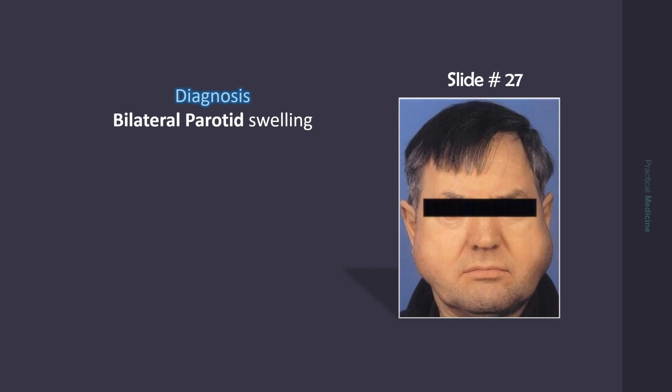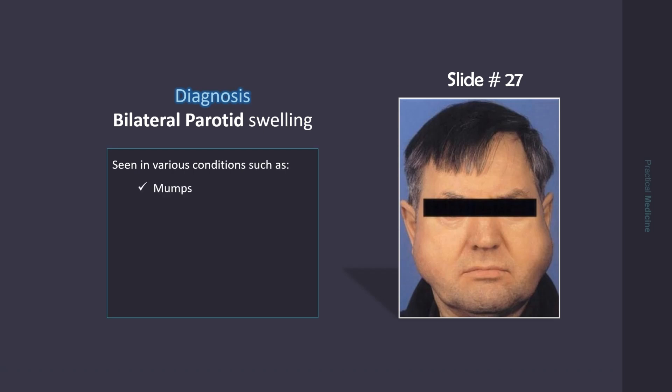There is bilateral parotid gland swelling here. It is seen in various conditions. A few common examples are mumps, sarcoidosis, Sjögren's syndrome, amyloidosis, hypothyroidism, and alcoholism.